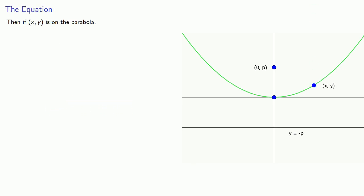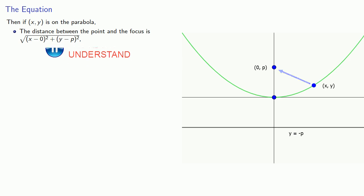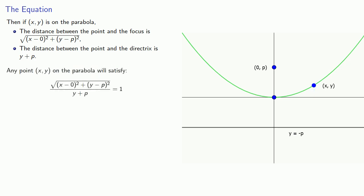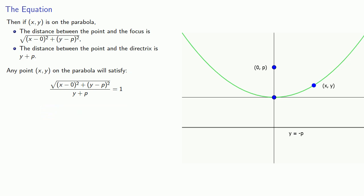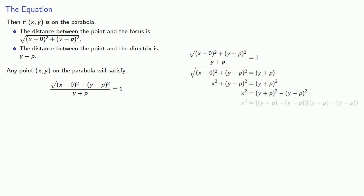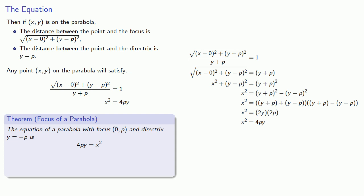So if (x, y) is a point on the parabola, the distance between the point and the focus, and the distance between the point and the directrix can be computed. Since the ratio of these two distances is equal to 1, this allows us to set up an equation. After algebraic simplification, this proves the first part of the following result: the equation of a parabola with focus (0, p) and directrix y equals negative p is 4py equals x squared.